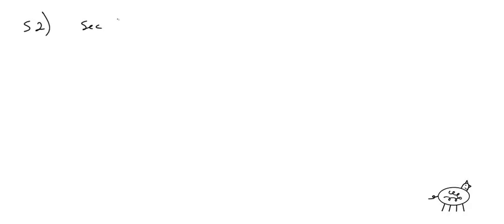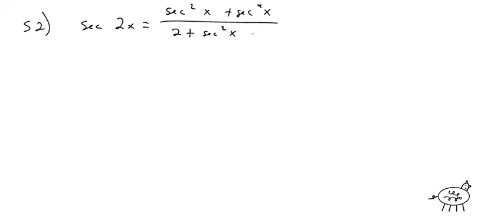Problem 52: secant of 2x equals secant squared of x plus secant to the fourth of x, all over 2 plus secant squared of x minus secant to the fourth of x. Obviously, we're going to work on the right side. What I would do is factor out a secant squared of x from the top, giving 1 plus secant squared of x.